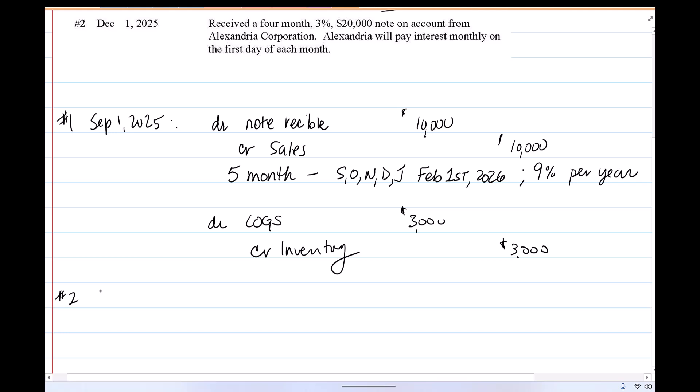So number two on December 1st. And because there's no payments going on, there's nothing in between these two transactions with respect to the notes. December 1st, we received a four month, 3% $20,000 note on account from Alexandria Corporation. Alexandria is going to pay interest monthly on the first day of each month.